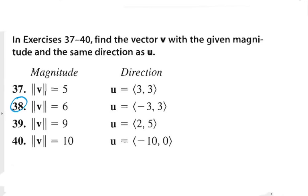Let's do problem 38 instead of 39. It says find vector v with the given magnitude in the same direction as u. So the direction of u for problem 38, u = (-3, 3), it's going to be one, two, three to the left and up three, so I put a dot right there.